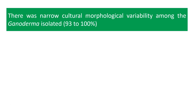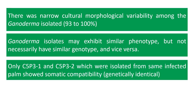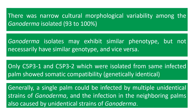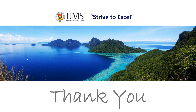In conclusion: there was narrow cultural morphological variability among the Ganoderma isolates, ranging from 93 to 100 percent. Ganoderma isolates may exhibit similar phenotype but not necessarily similar genotype, and vice versa. Only isolates C5P3-1 and C5P3-2, isolated from the same infected palm, showed somatic compatibility — meaning they are genetically identical. Generally, a single palm can be infected by multiple unidentical strains of Ganoderma, and infection in neighboring palms is also caused by unidentical strains. This further concludes that spread of Ganoderma via root-to-root contact is not common, and basidiospore dissemination plays an important role in disease epidemiology. Thank you.